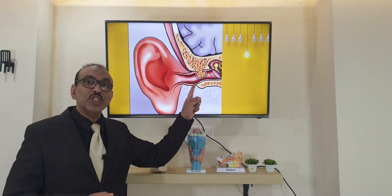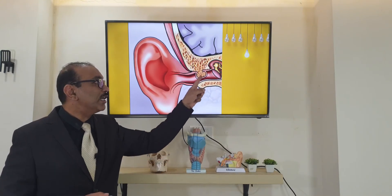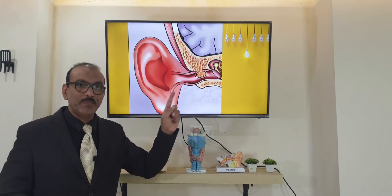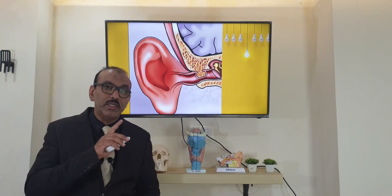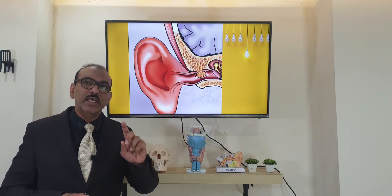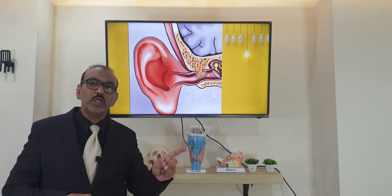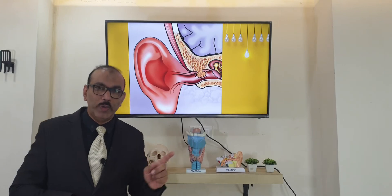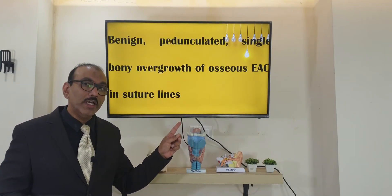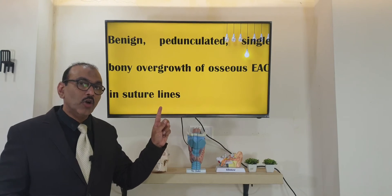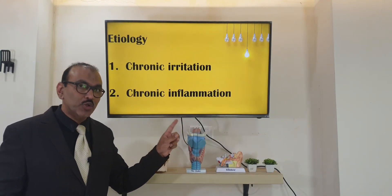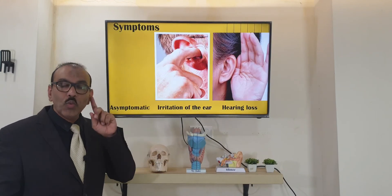Exostosis is not a single bone growth — it will be multiple bone growths in the same ear, and it is not in the suture line; it can be anywhere. It will be seen on both ears, and there will be a definite history. In most cases, they will say there is exposure to cold water or cold wind. That is exostosis. What we are talking about now is not exostosis — it is osteoma, where it is single, seen in the suture line, and only in one side of the ear.